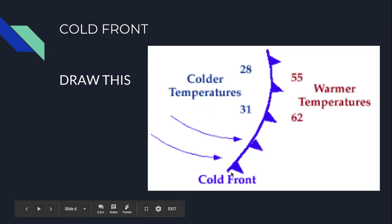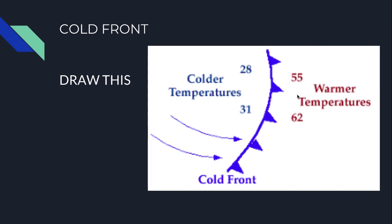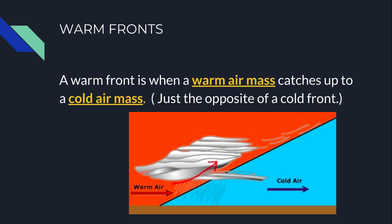A cold front is always going to be blue and it looks like little icicles — that's what I like to think of them as, because it's cold air behind it. As this cold front moves this way, the cold air is going to move in, so the folks over here where it's warmer are going to be really cold soon. That's what a cold front is.